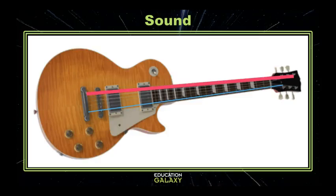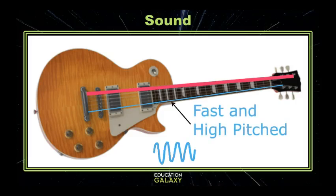This also happens on instruments. Let's look at a guitar. A guitar has six different strings that make different pitched sounds. The strings are all different lengths and thicknesses. The shortest string makes the fastest, most high-pitched sound, while the longest, thickest string makes a slow, low-pitched sound.